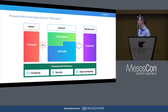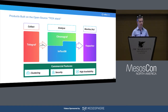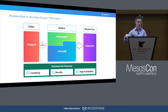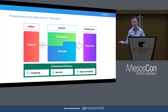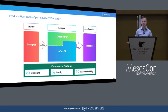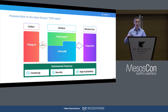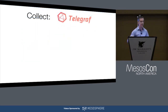We built a bunch of different components for this. We have a collection agent called Telegraf; for visualization and dashboarding, we have Chronograf; for storage, we have InfluxDB; and for monitoring and processing the data, we have Kapacitor. I'll cover each one of these pieces.